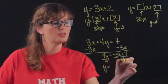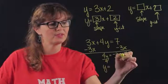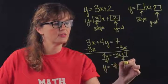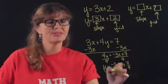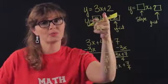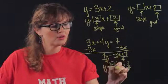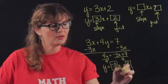So y equals, now the 4 distributes because of this plus, negative 3 fourths x plus 7 fourths. Now this is not near as pretty as y equals 3x plus 2 but it's still in the same shape. You have a number right here and a number right here.